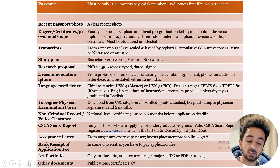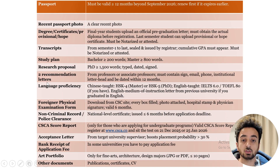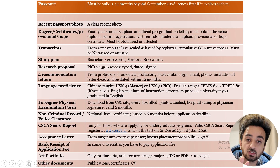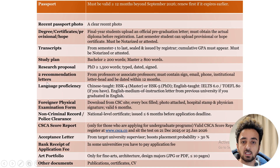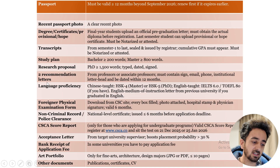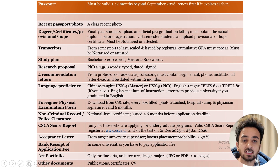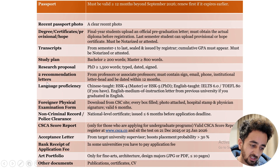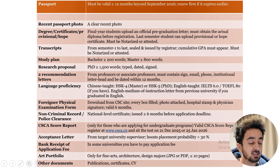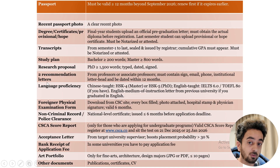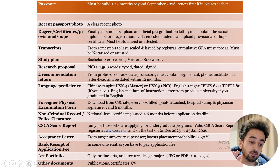The next document is two recommendation letters from your last institute. This is only required for master's and PhD students — bachelor students do not need recommendation letters. Go to your last university and get two recommendation letters from associate or full professors. If your university doesn't have full or associate professors, you can still try, but it's best if the letter states the recommender's rank — associate professor or full professor.